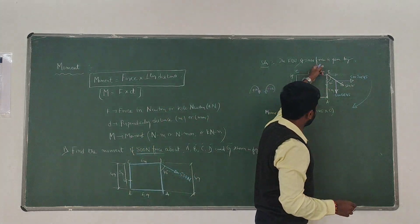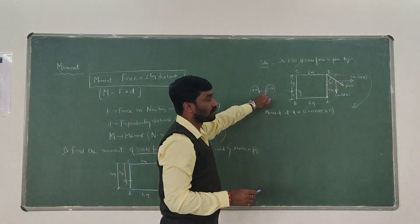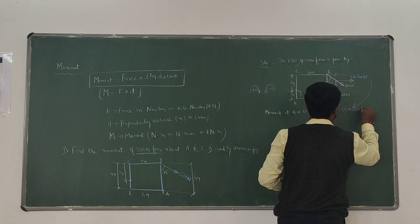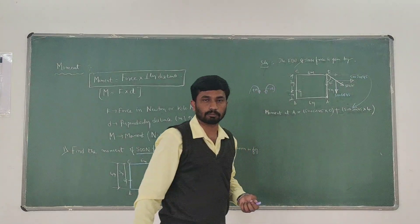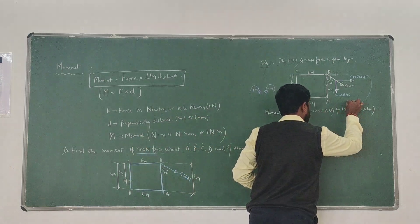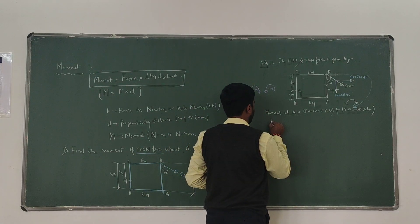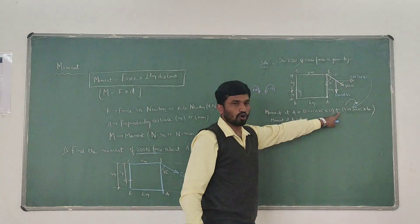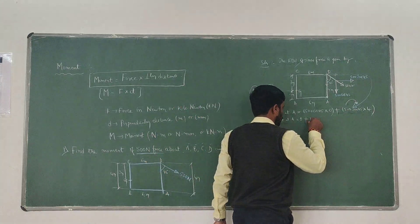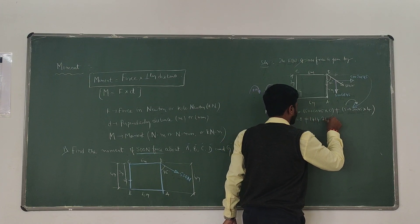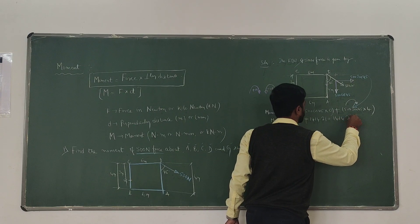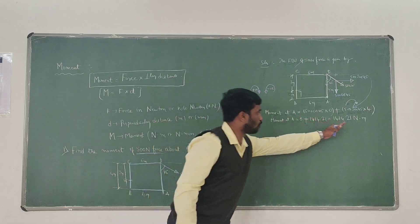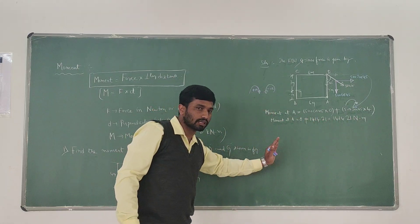With respect to joint A, 500 sin 45 moves in the clockwise direction with a perpendicular distance of 4 meters — hence it is positive. Therefore, moment at A equals 0 plus 500 sin 45 multiplied by 4, which gives 1414.21 Newton-meter. This is a positive, clockwise moment.